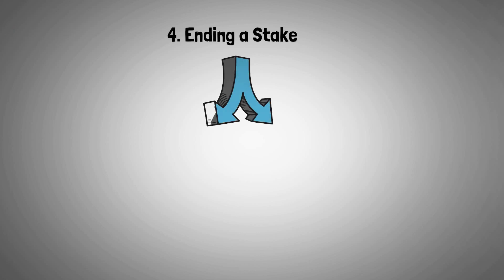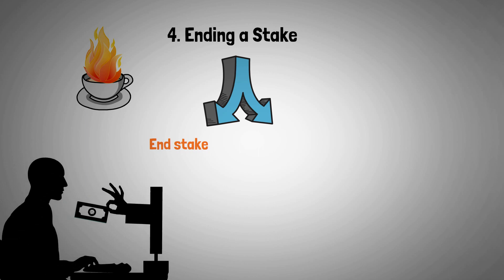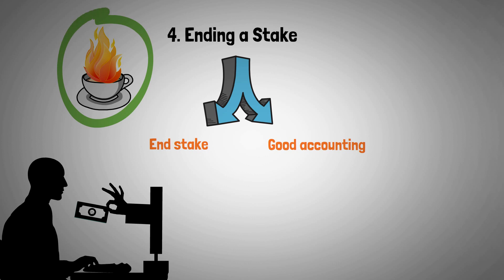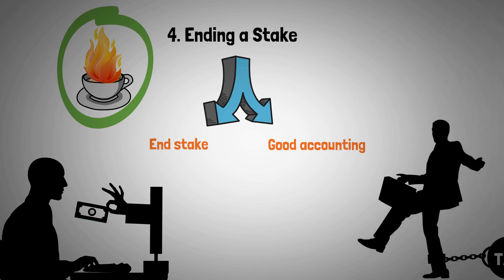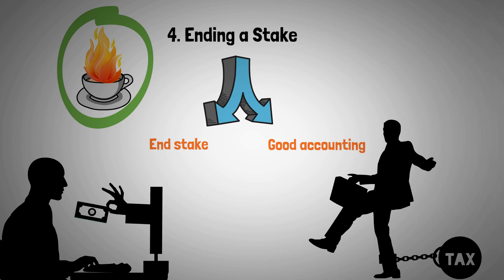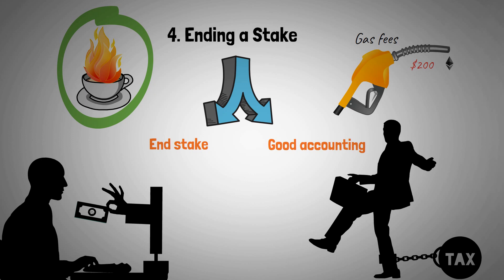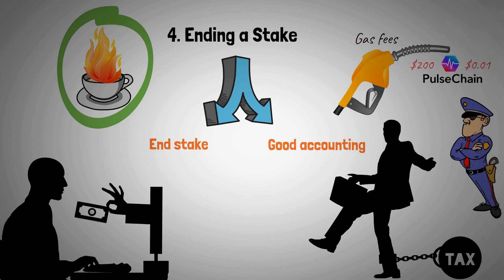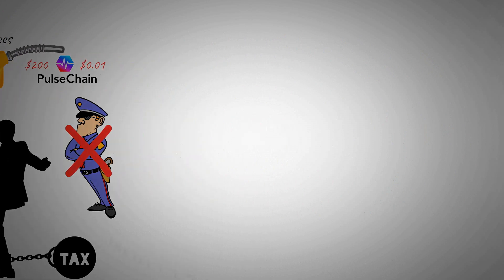If you respect the conditions of the smart contract and unstake within the two weeks, you have two options. Either you choose end stake, where after burning your T-shares you receive your HEX tokens directly, or you choose good accounting. With good accounting, your T-shares are also burned but you choose not to receive your tokens right away — people choose this when they want to collect their profit in a new calendar year for tax purposes. Another reason is when the gas fees or transaction fees are too high. On the Ethereum blockchain, these costs can run up to $200 per transaction. This is why HEX's founder Richard Hart is developing a new blockchain called Pulse Chain, where a transaction would cost less than one cent. If you choose good accounting, you won't be getting any more penalties.